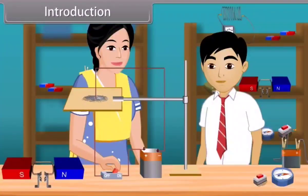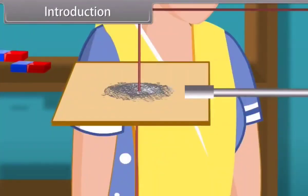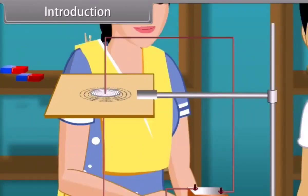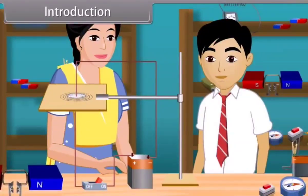When she switches on, some movement is shown in the iron dust particles and they start arranging in a concentric circles pattern. She performed this experiment to show the magnetic effect of current. The iron dust particles arranged into the concentric circle pattern due to the magnetic field generated by the electric current.